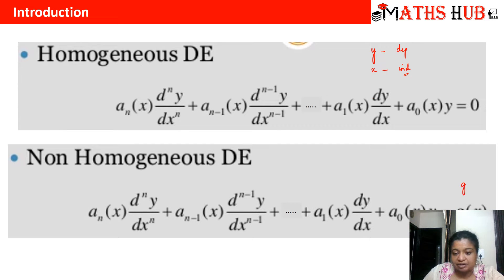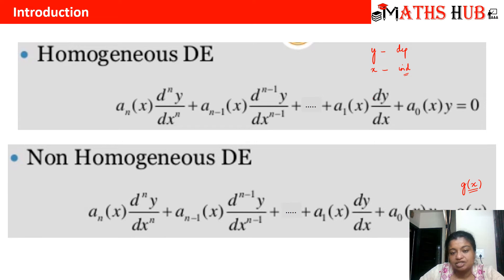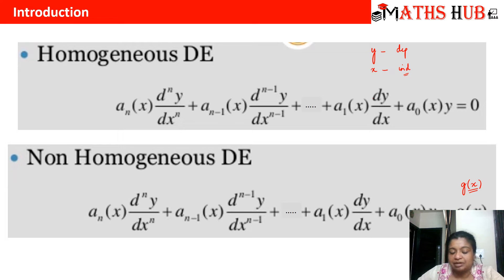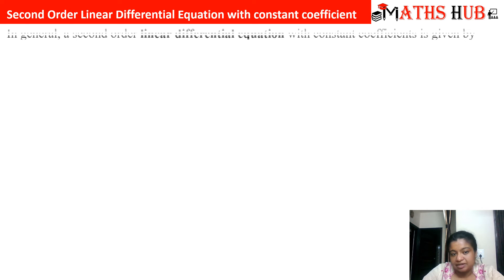If on the right-hand side we write a term g(x), which purely contains the independent variable x, then this is called a non-homogeneous differential equation. In summary: if all dependent terms stay on the left and nothing remains on the right, the equation is homogeneous; if a term containing only x can be shifted to the right, it is non-homogeneous. Now, how do we solve these homogeneous or non-homogeneous differential equations?